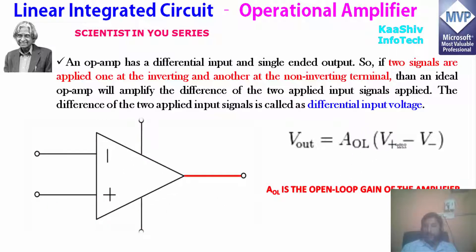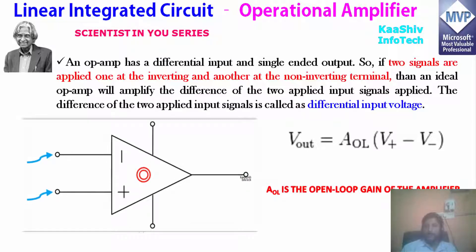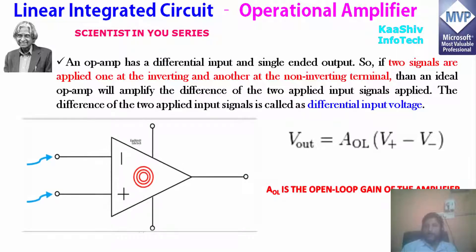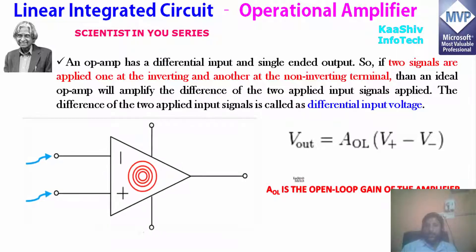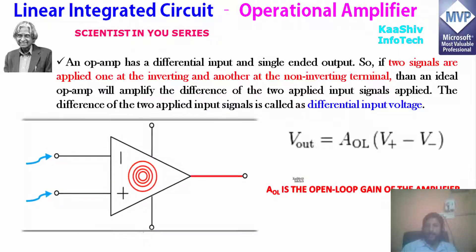The value is multiplied — that is the output voltage. This is the power amplifier. This is the power amplifier function, which is used to generate a very large voltage.